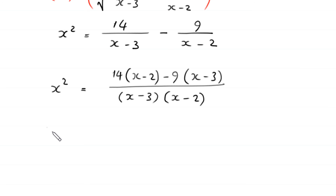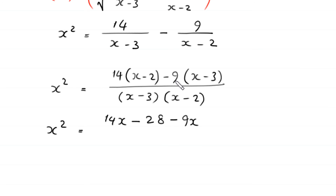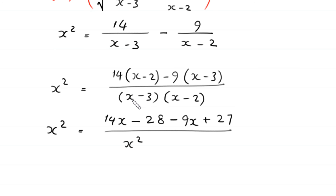So we multiply negative 9 by (x minus 3). Expanding the right-hand side: 14x minus 28 minus 9x plus 27. The left-hand side x squared times (x minus 3)(x minus 2) expands to x squared times (x² minus 5x plus 6). Moving 5x minus 1 gives x⁴ minus 5x³ plus 6x² minus 5x plus 1 is equal to 0.